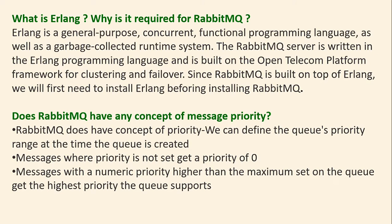Does RabbitMQ have any concept of message priority? RabbitMQ does have a concept of priority. We can define the queue's priority range at the time the queue is created. Messages where priority is not set get a priority of 0. Messages with a numeric priority higher than the maximum set on the queue get the highest priority that the queue supports.